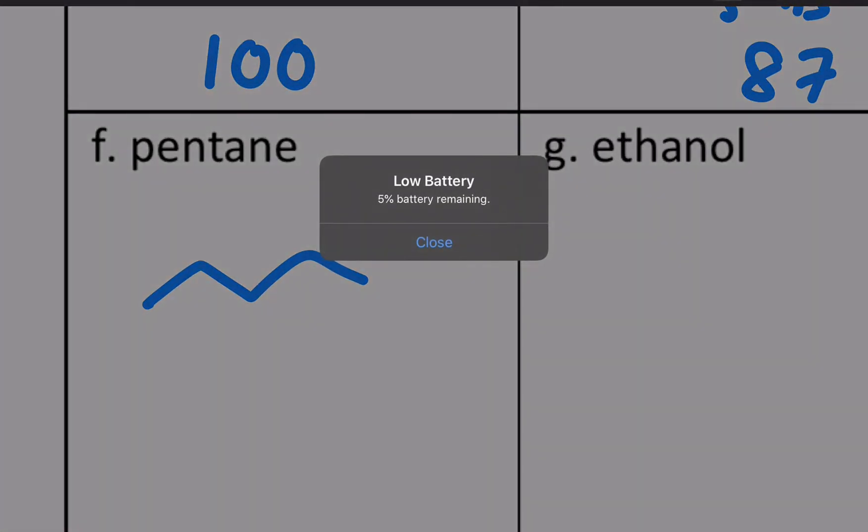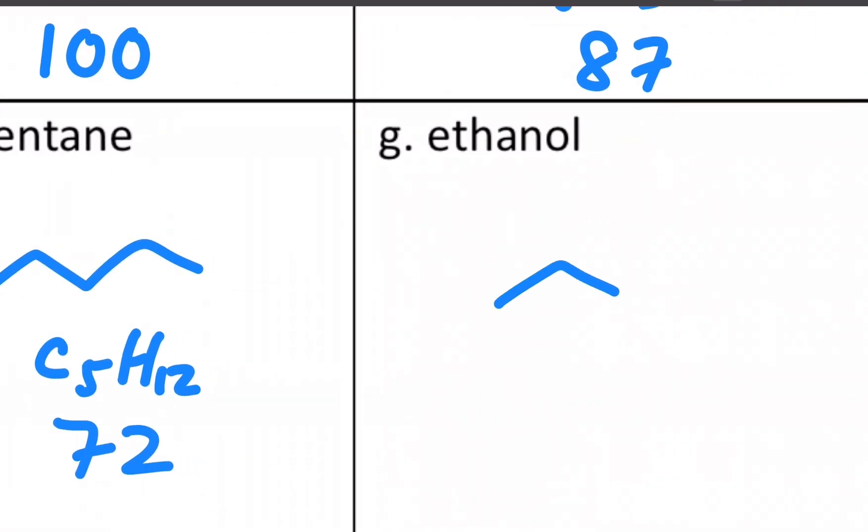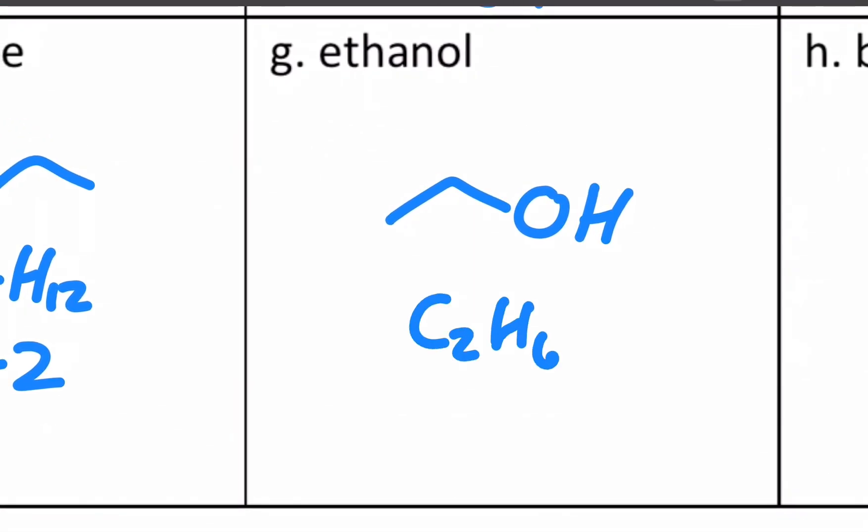Pentane, just five carbons in a chain. That's C5H12, weighs 72. Ethanol, very simple little molecule, C2H6O, which weighs 46.